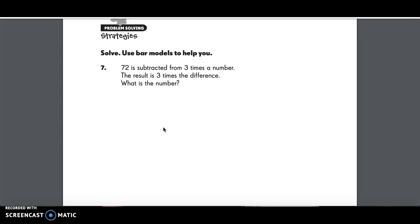Number seven, 72 is subtracted from three times a number. The result is three times the difference. What is the number?